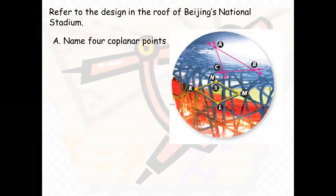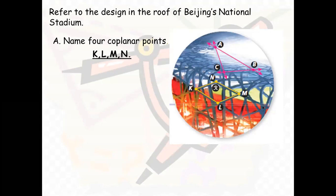Now let's solve a question. This is the design in the roof of Beijing National Stadium — an architect would have done this design. You can see that there is a plane here, and also another plane here. A plane does not necessarily need to look a specific way — it can be a triangle, square, rectangle, or diamond — anything that is a flat surface. The question asks you to name four coplanar points. The four points on the plane are K, L, M, N — so points KLMN are coplanar because they are on the same plane.